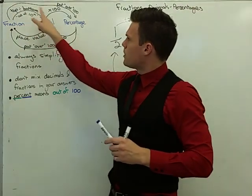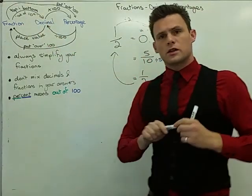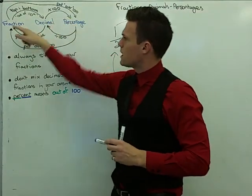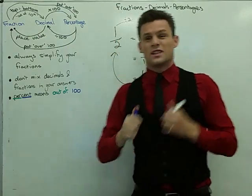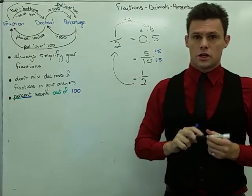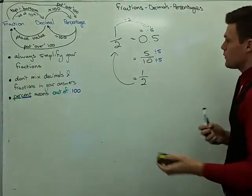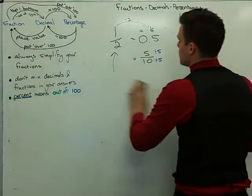So if I have top divided by bottom, I can get from fraction to decimal. And if I go from decimals back to fractions, I simply need to think in terms of place value. We're going to do a few more complicated ones, and I'm also going to introduce another method.